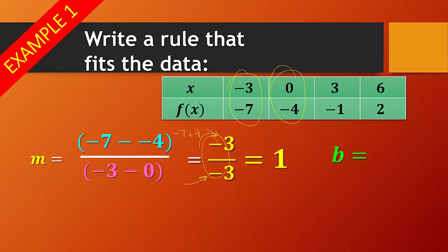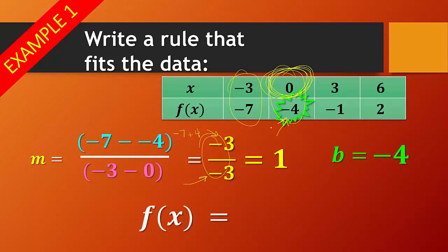For our y-intercept, look for our x equals 0. And then just find the corresponding y value, which is that right there. So we have negative 4. So when we put this in, we have f(x) equals 1x minus 4. Do you have to have the 1 there? No. You can put it there if you want. But just keep in mind that if this is 1, you may or may not have that 1 in front. It might just be x minus 4.